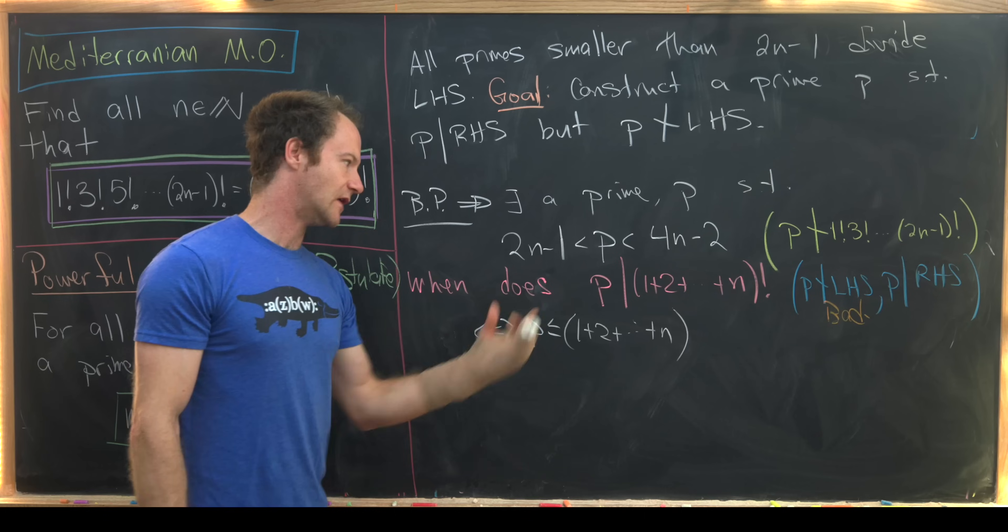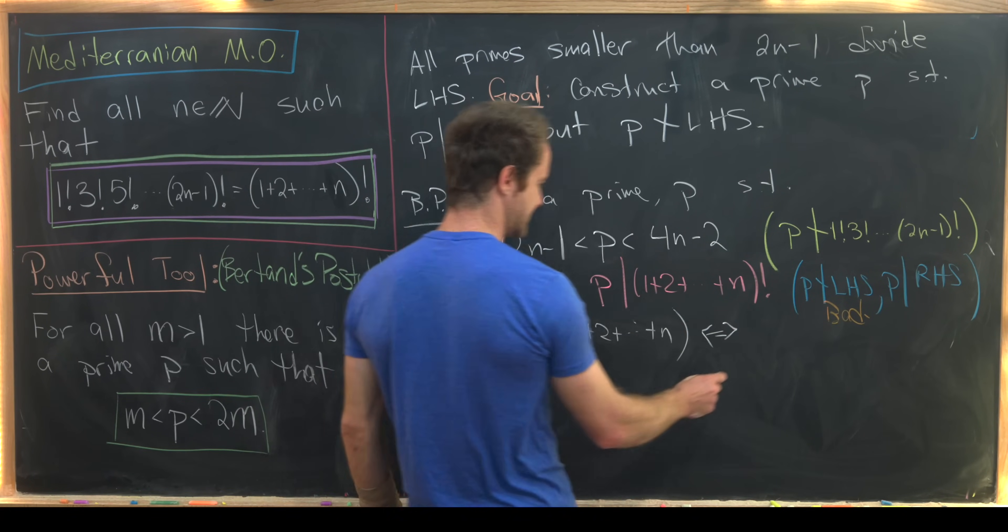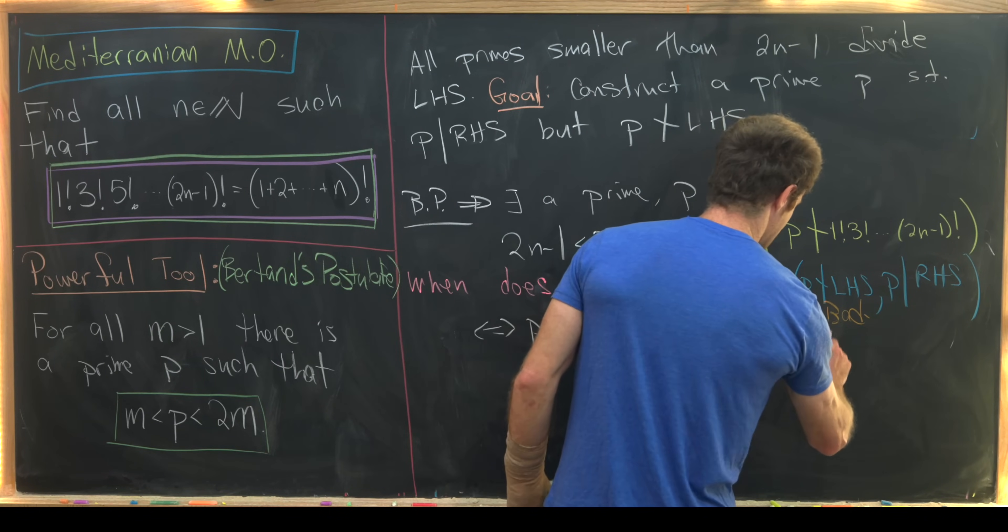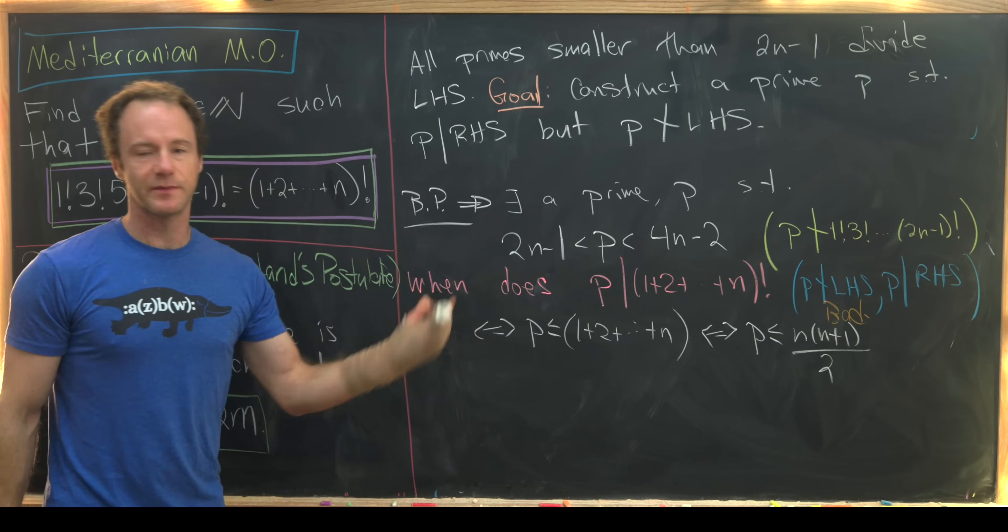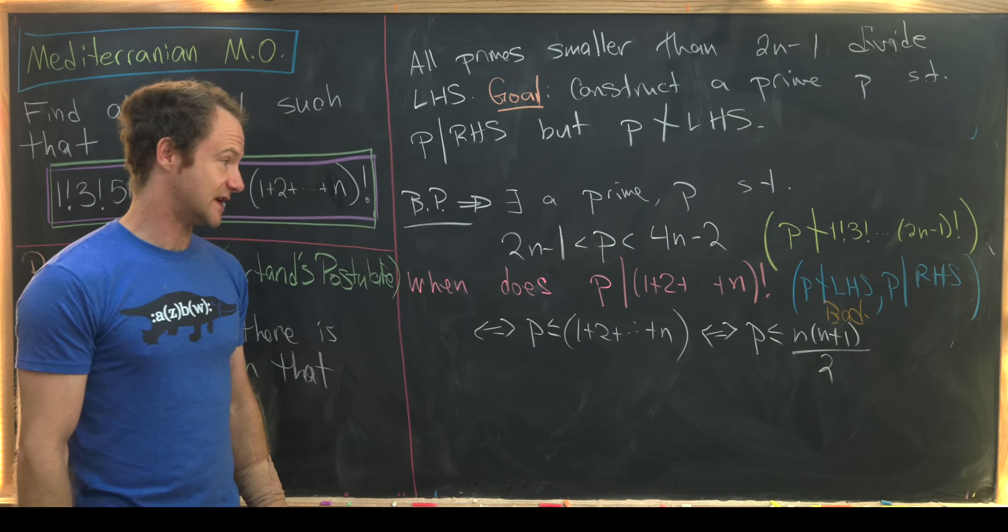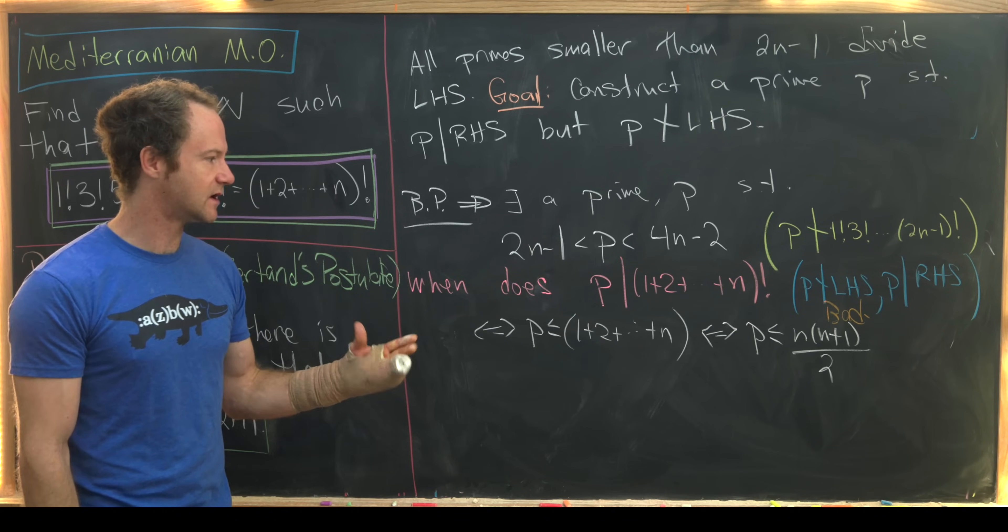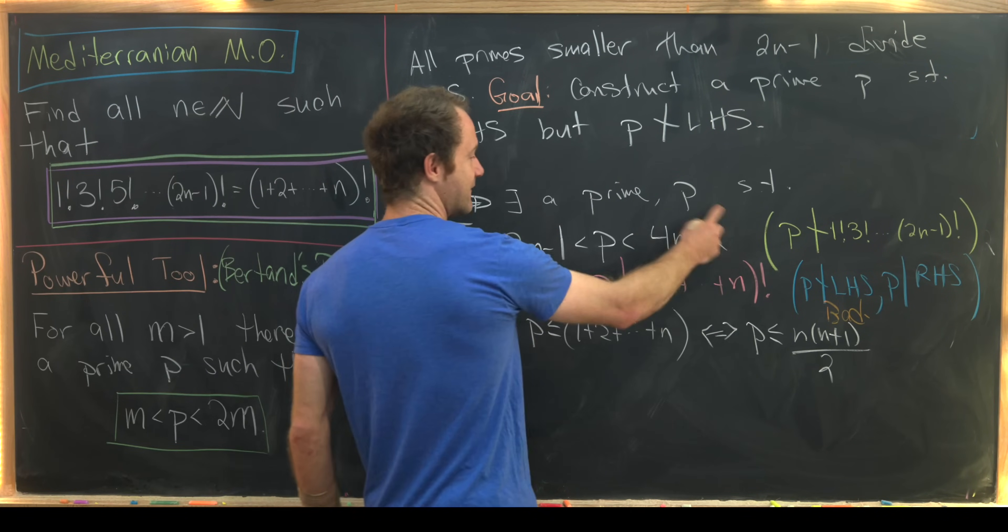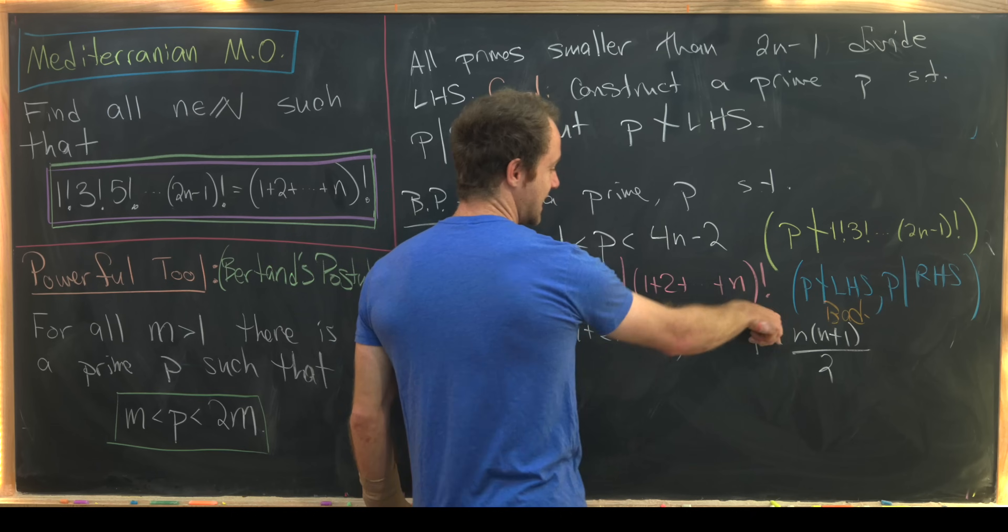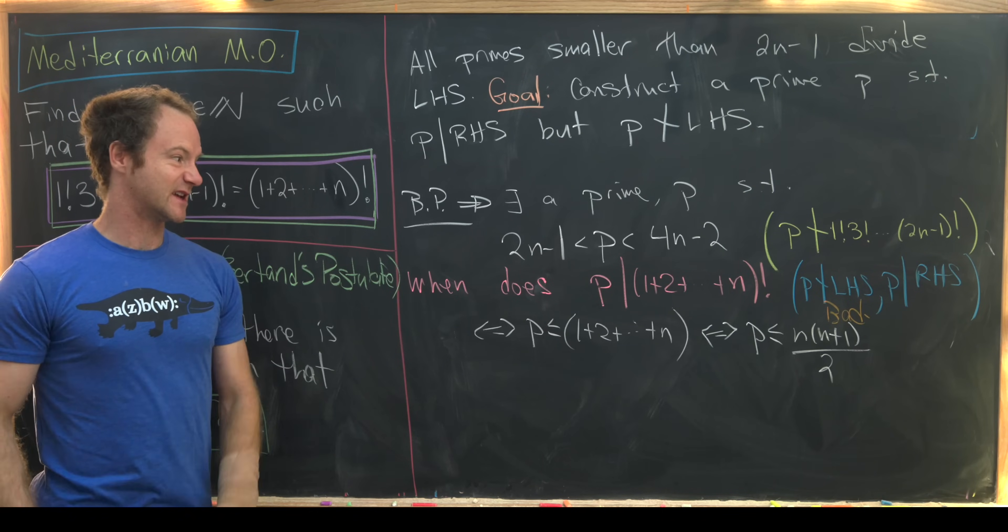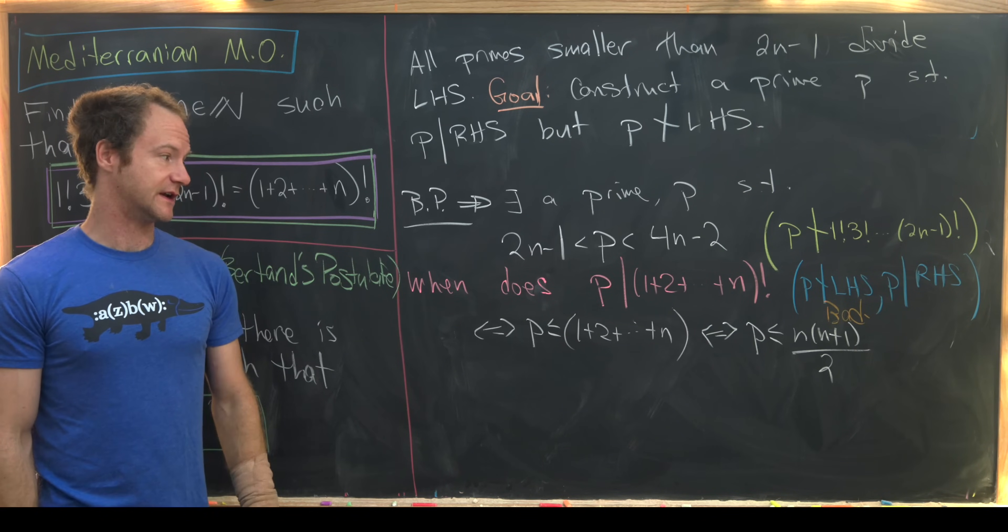But there's a well-known closed formula for this triangular number. This means that p must be less than or equal to n times n plus 1 over 2. And so it's a little bit easier to work with this n times n plus 1 over 2. So let's notice that if we sneak a 4n minus 2 into this inequality, then that gives us a slightly stronger inequality to try to work with that only depends on n.